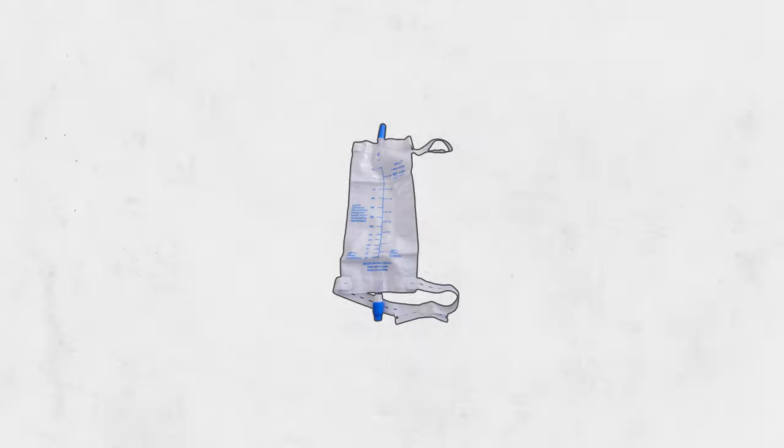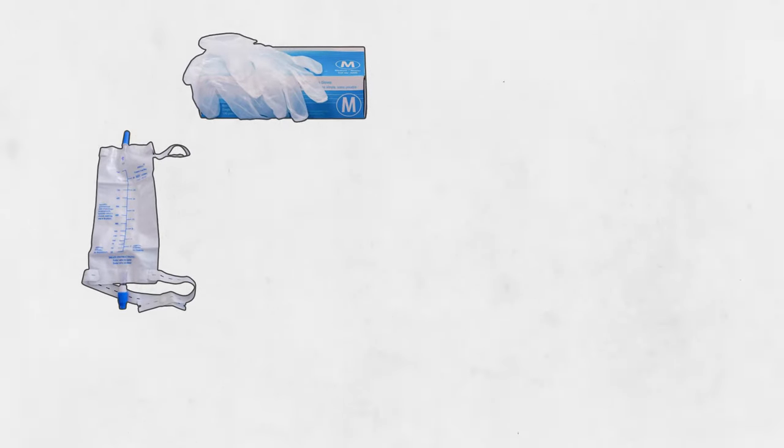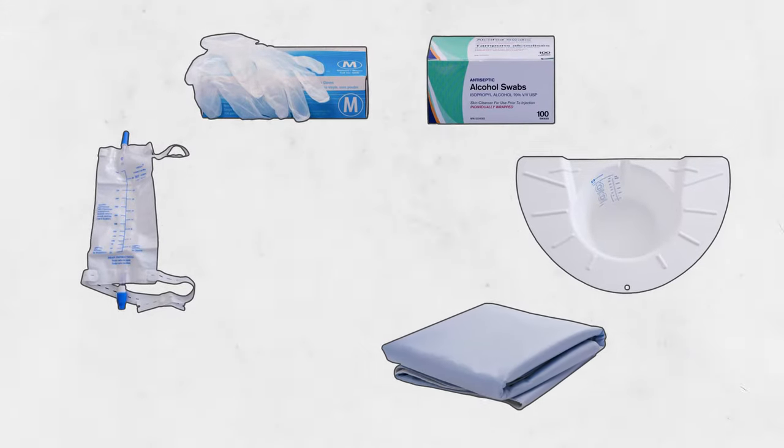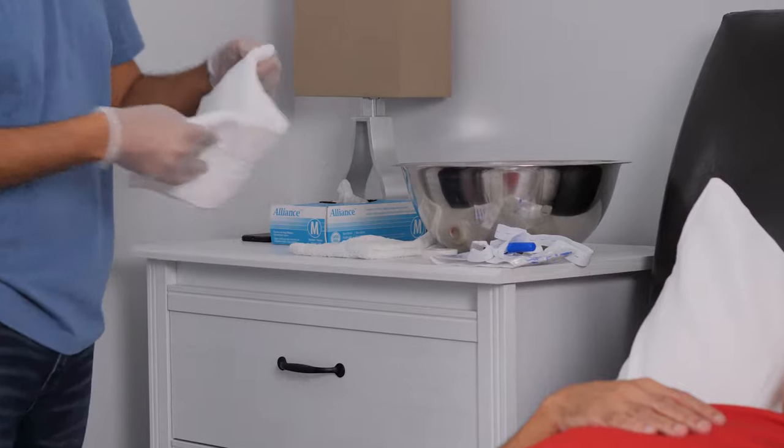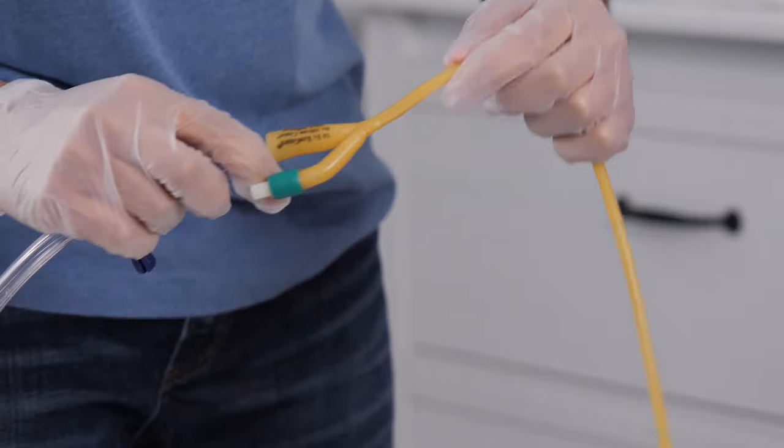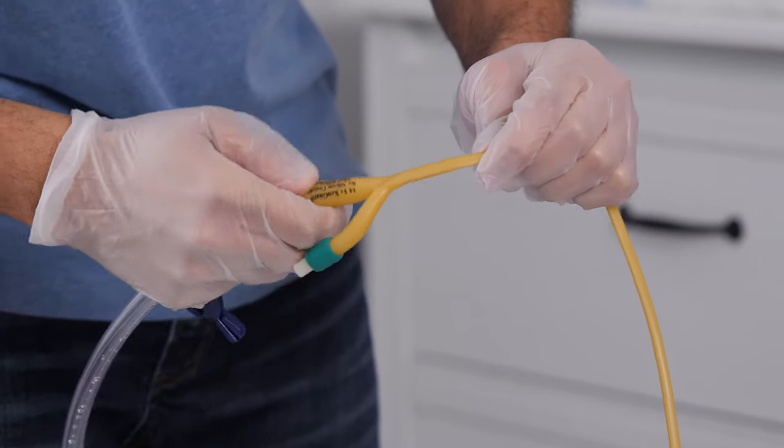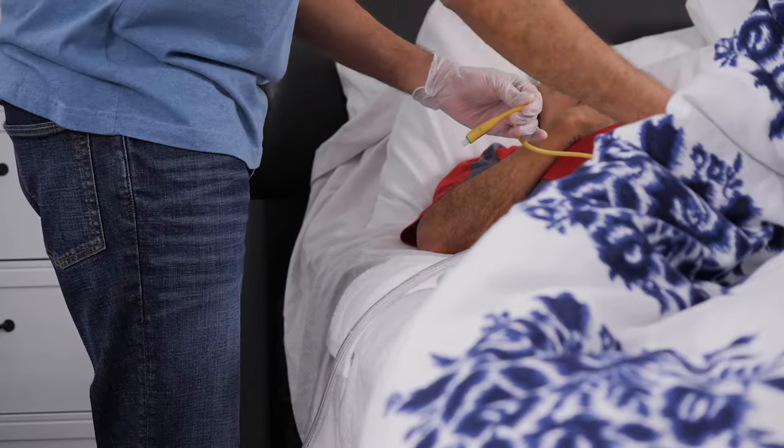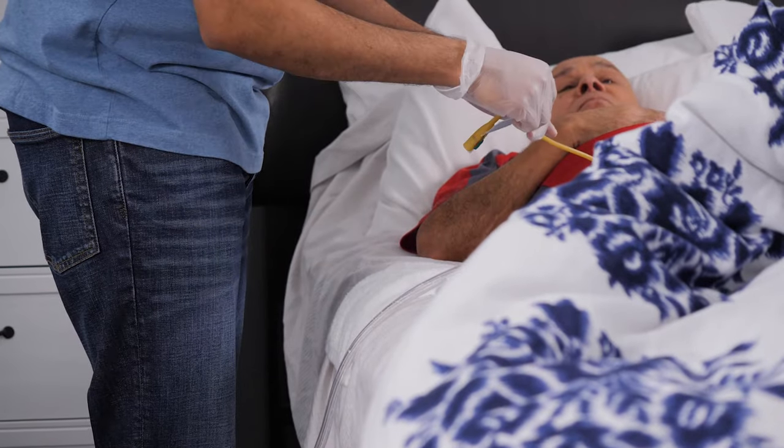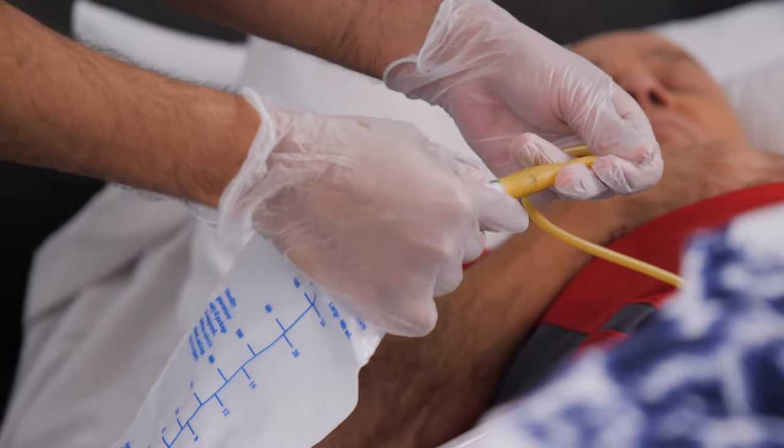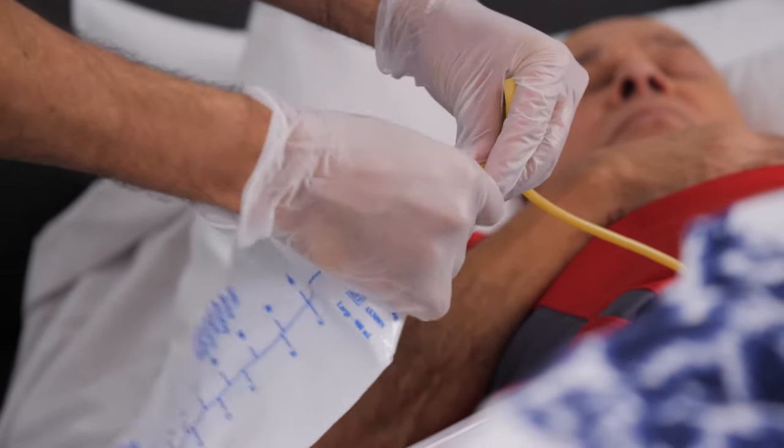To change the bag, you'll need a clean drainage bag, gloves, alcohol wipes, a container to drain urine into, and a waterproof pad or towel. Let's try it. After emptying the bag, place a towel, cloth, or waterproof pad under the connection between the catheter tubing and the bag tubing. Have your new bag nearby, then pinch the catheter tubing and carefully disconnect the catheter from the old bag. Wipe the catheter tube with an alcohol wipe and connect the new bag. Set the old bag aside to clean it after.